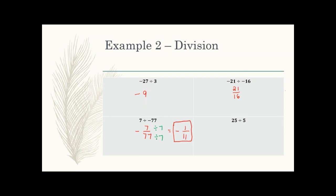Bottom right: both positive numbers, so the answer will be positive. 25 divided by 5 is 5.